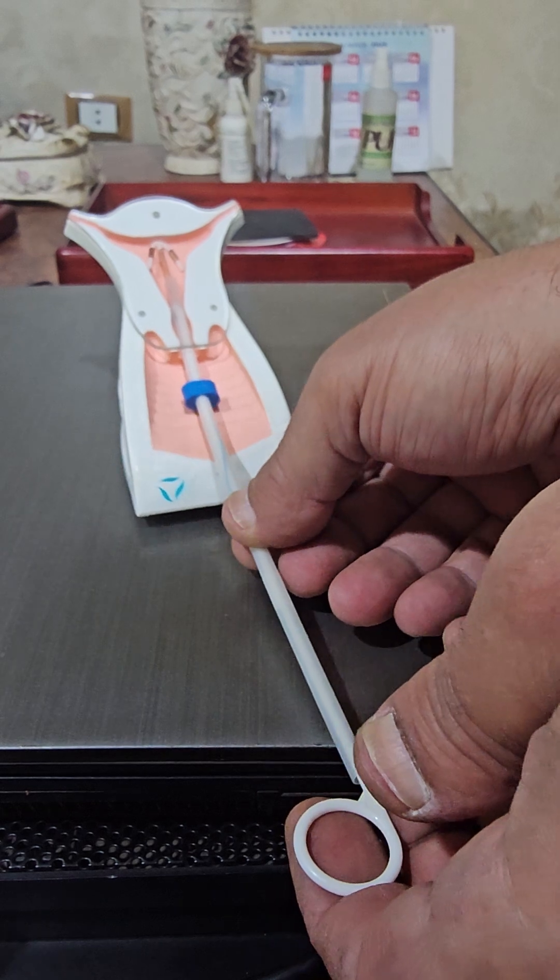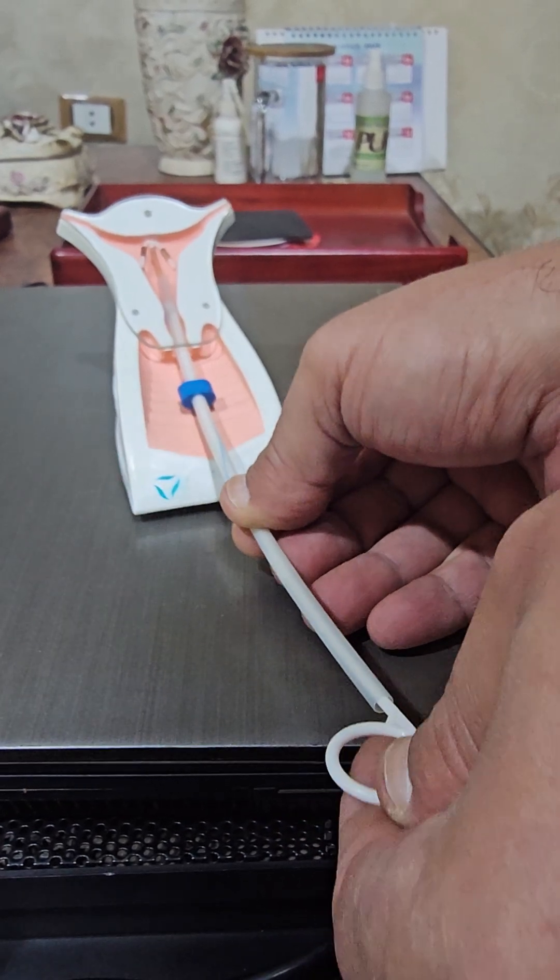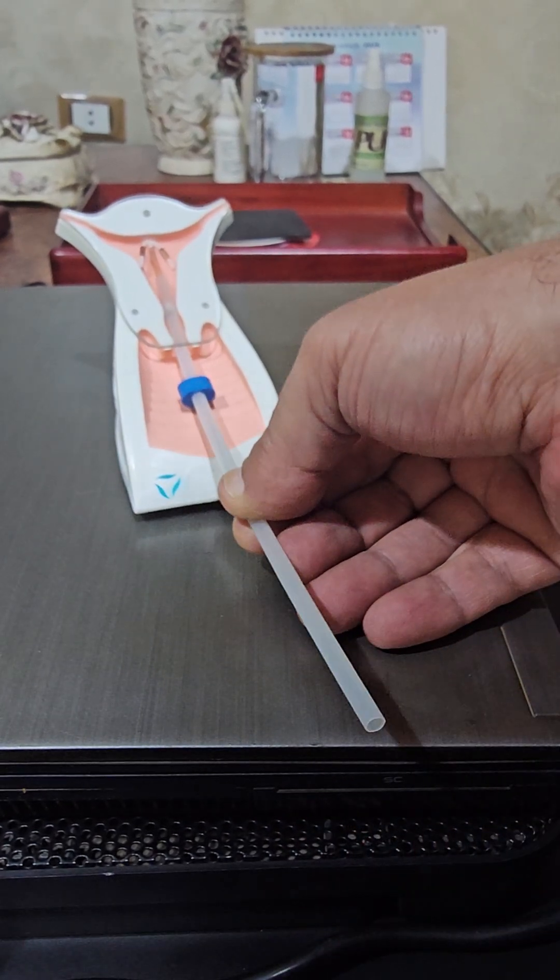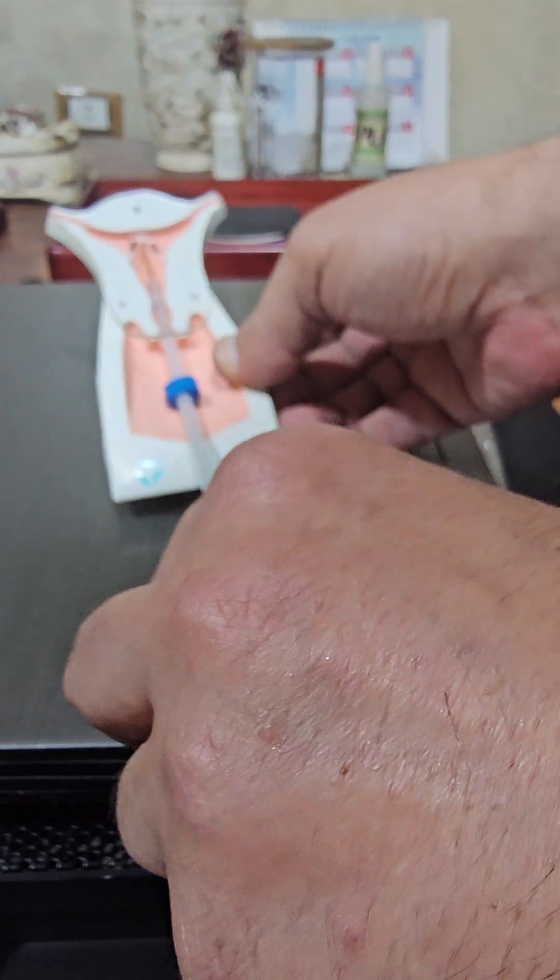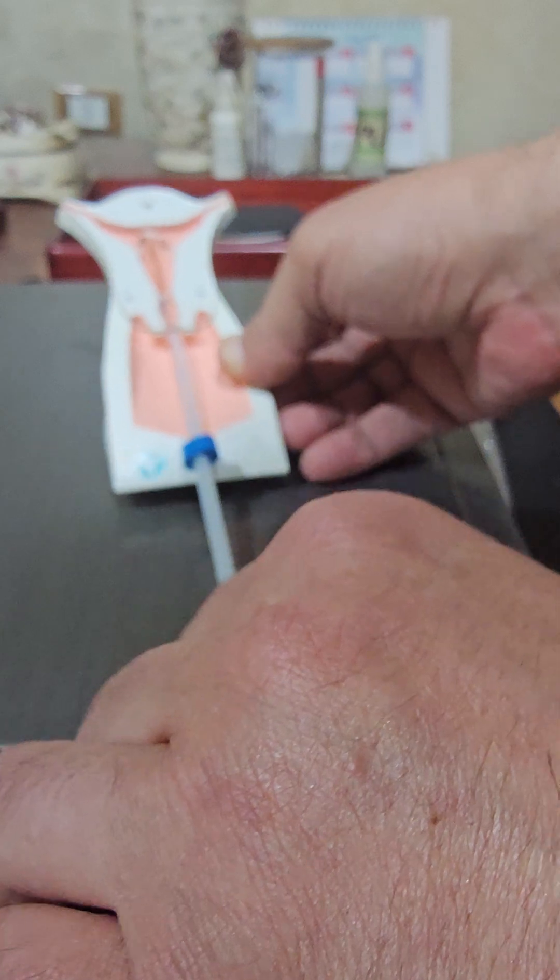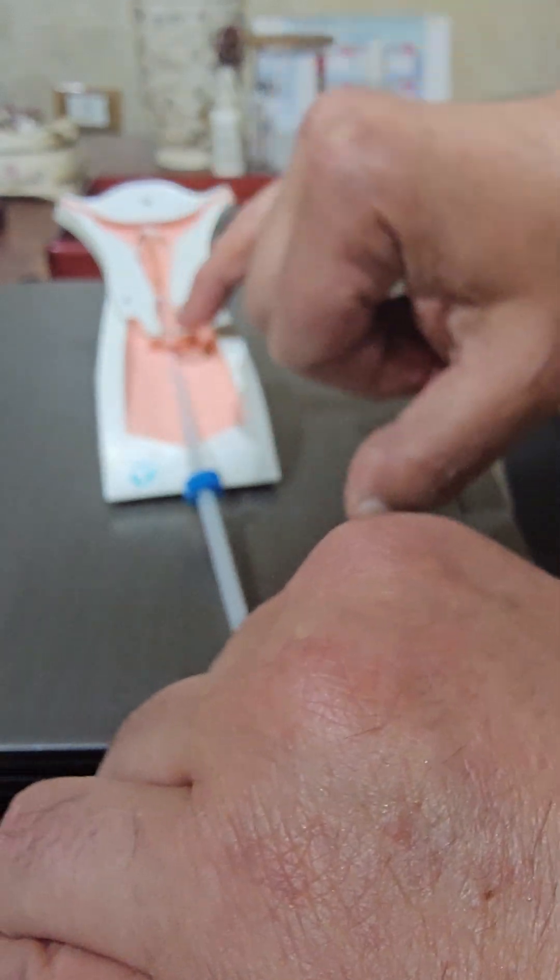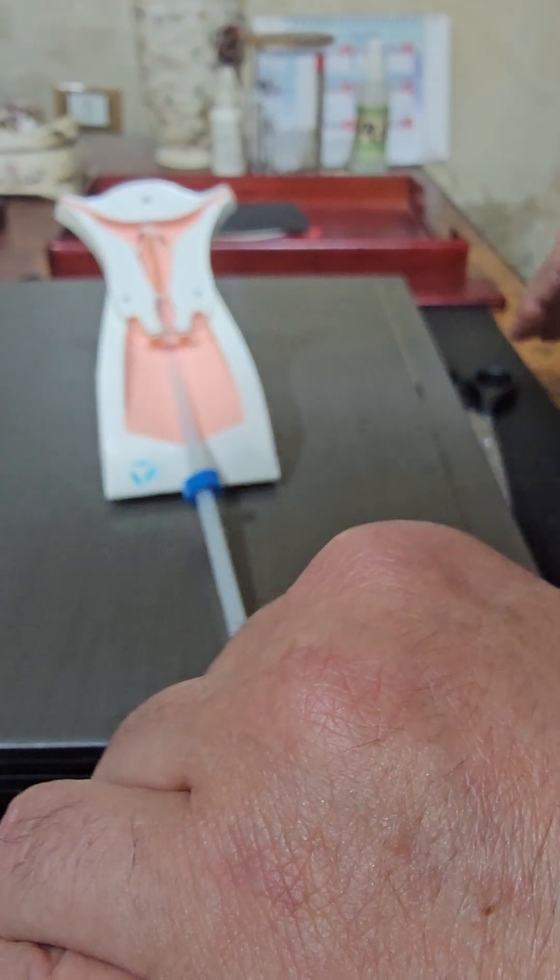What we are going to do next? We will remove the plunger like this, and then we will withdraw the inserter smoothly and easily like that. Then the threads will come through the external os like this.